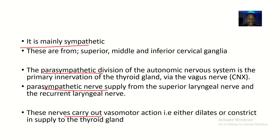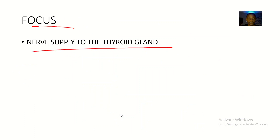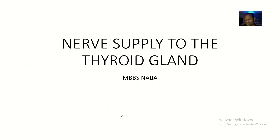These nerves carry out vasomotor actions — either dilating or constricting the thyroid gland. Dilation is the role of the parasympathetic and constriction is the role of the sympathetic nerve. This has been a short video on the nerve supply to the thyroid gland. Hope you guys enjoyed this — see you in the next one, bye for now.